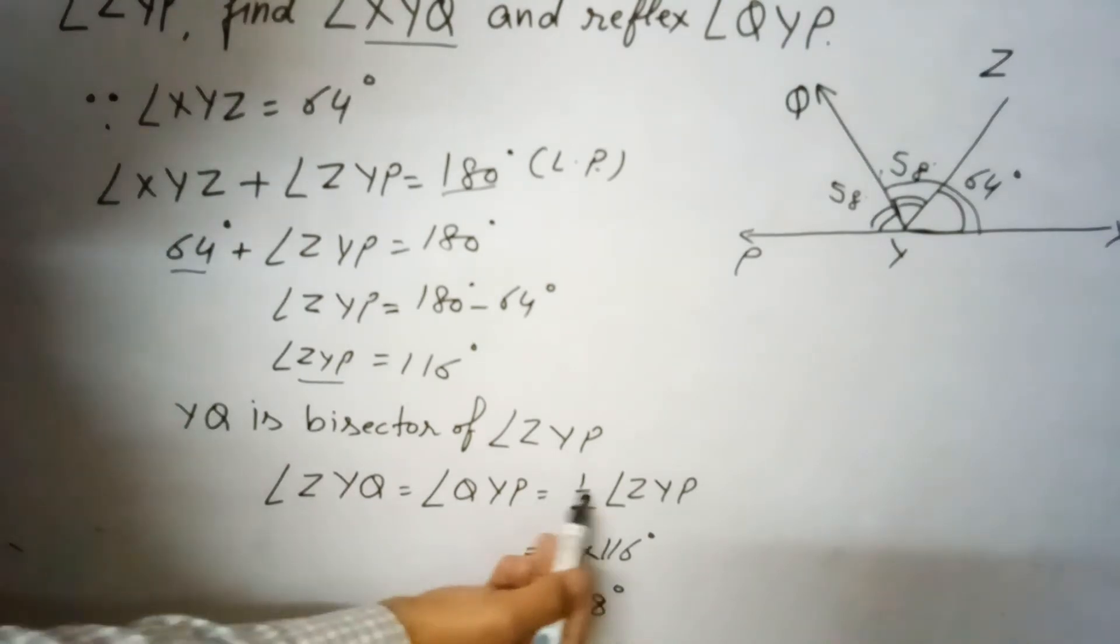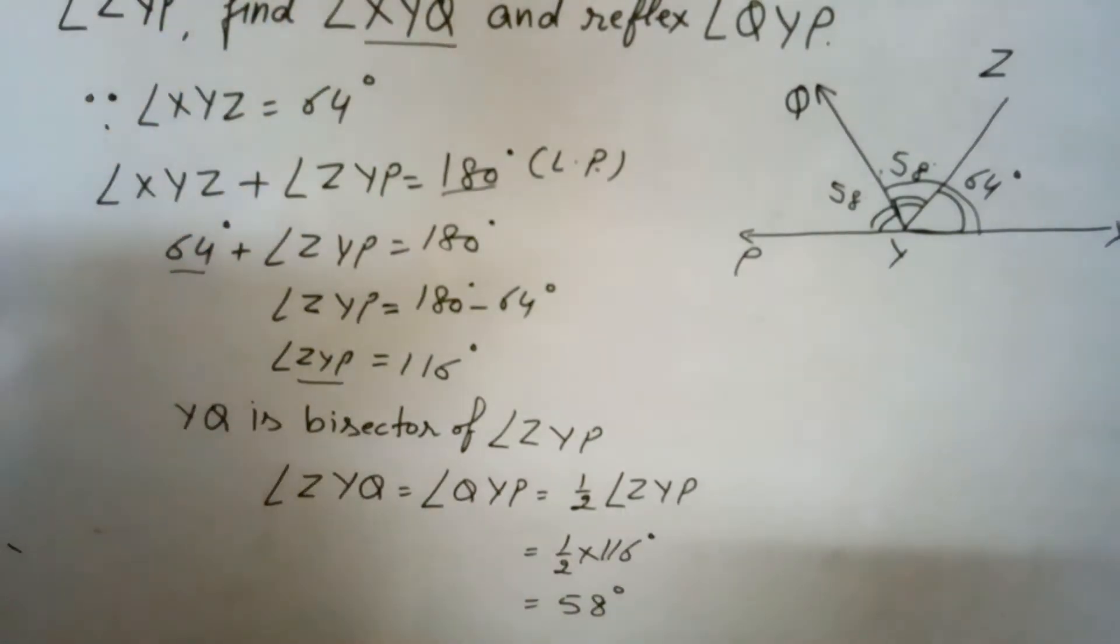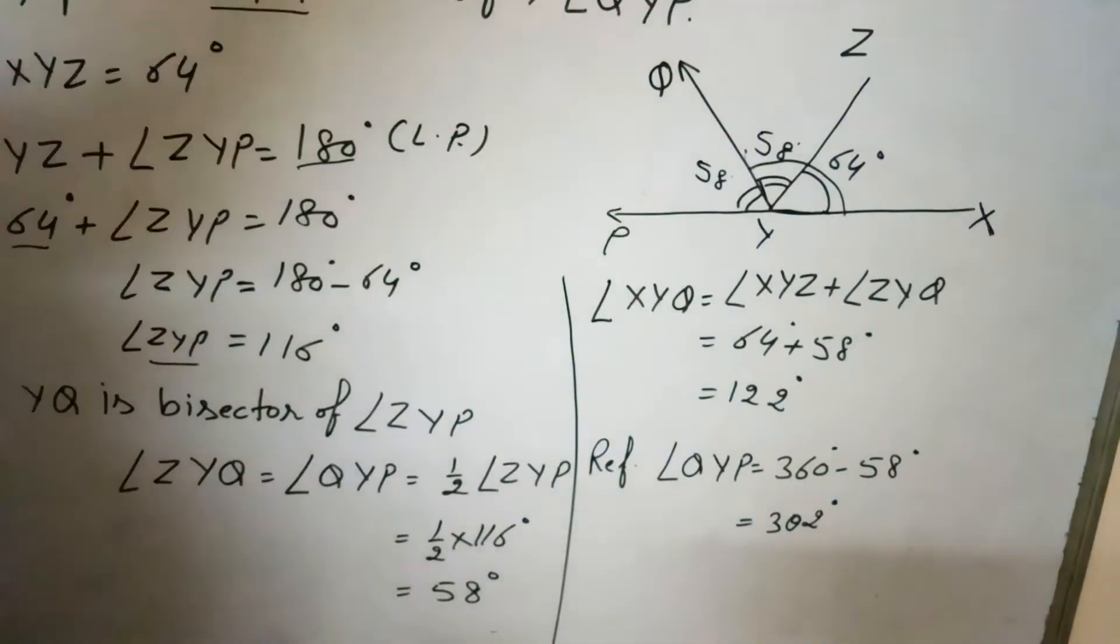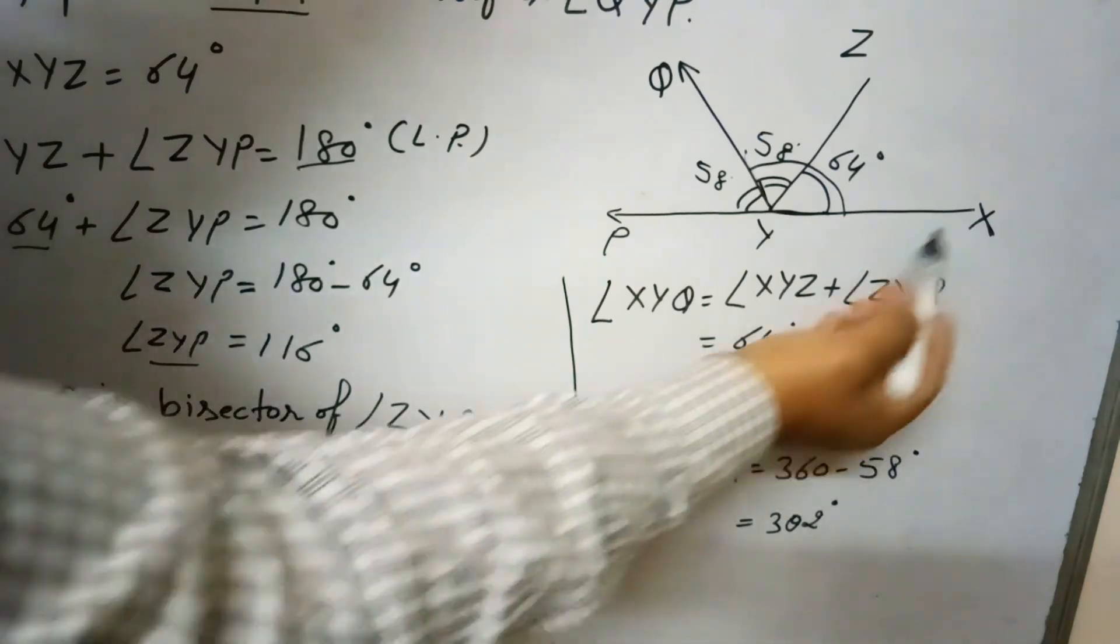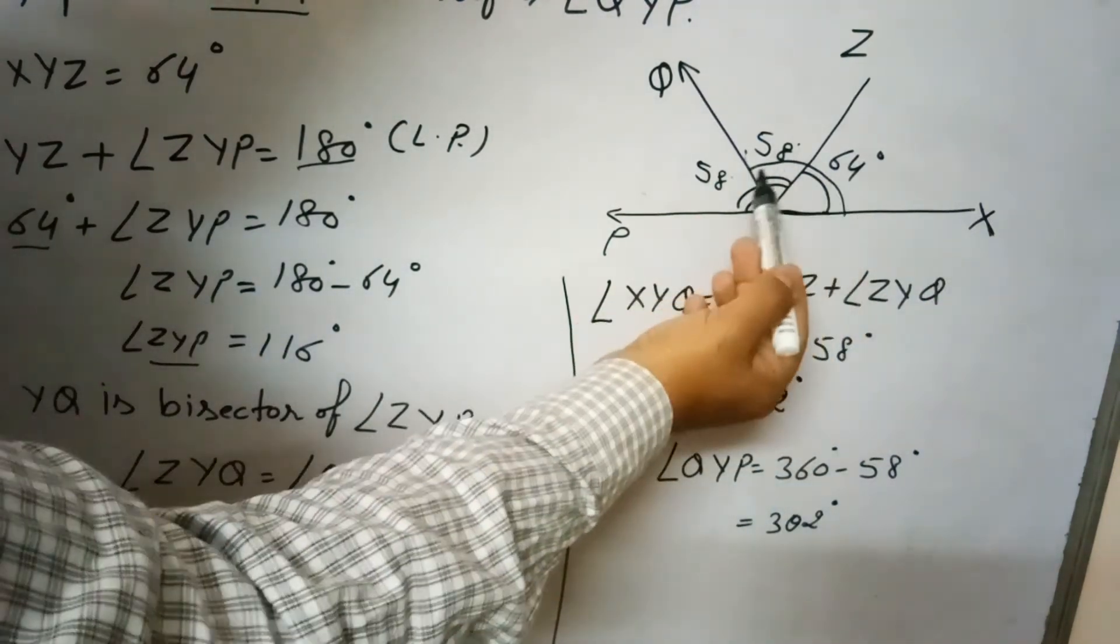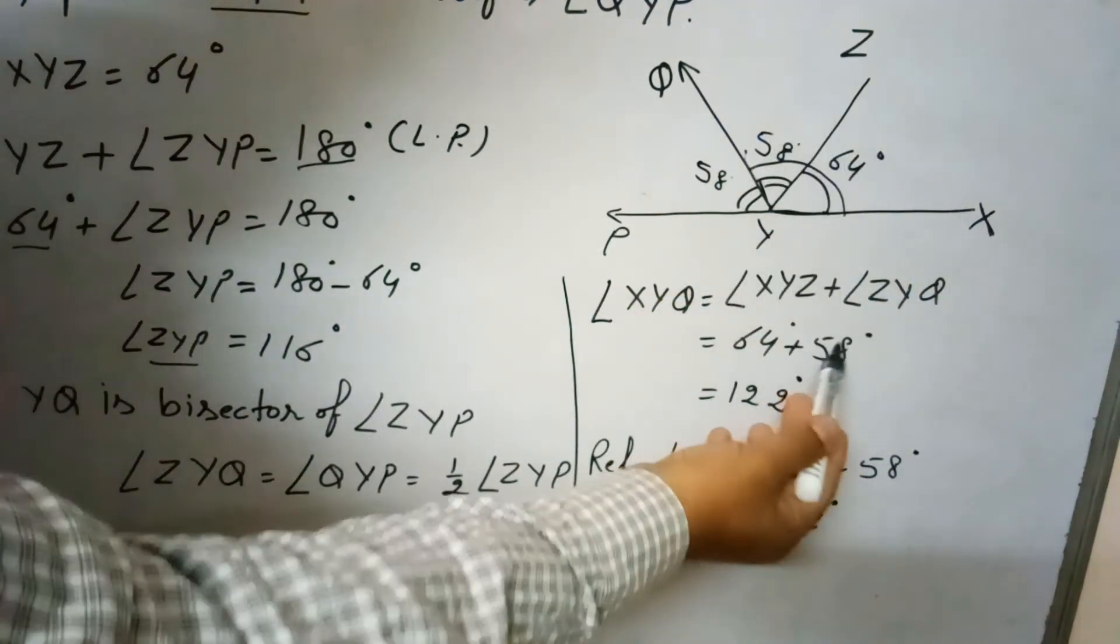So angle XYQ, the sum of these both angles 64 and 58 degrees, so this is 122 degrees.